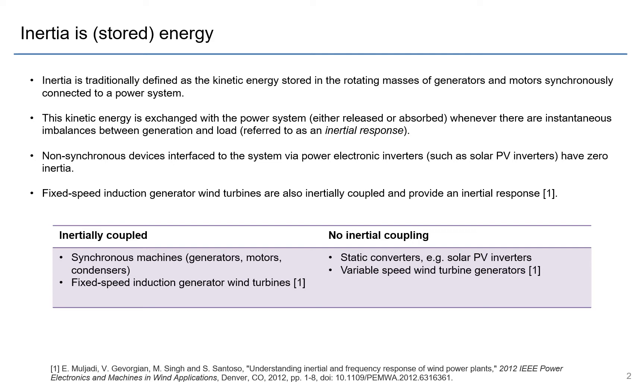Non-synchronous devices that are connected to the system via power electronic inverters, such as solar PV or type 4 wind turbines, they have zero inertia—there's no inertial coupling there. And it's been shown also that fixed-speed induction generator wind turbines are actually inertially coupled and do provide an inertial response, as per this reference one here.